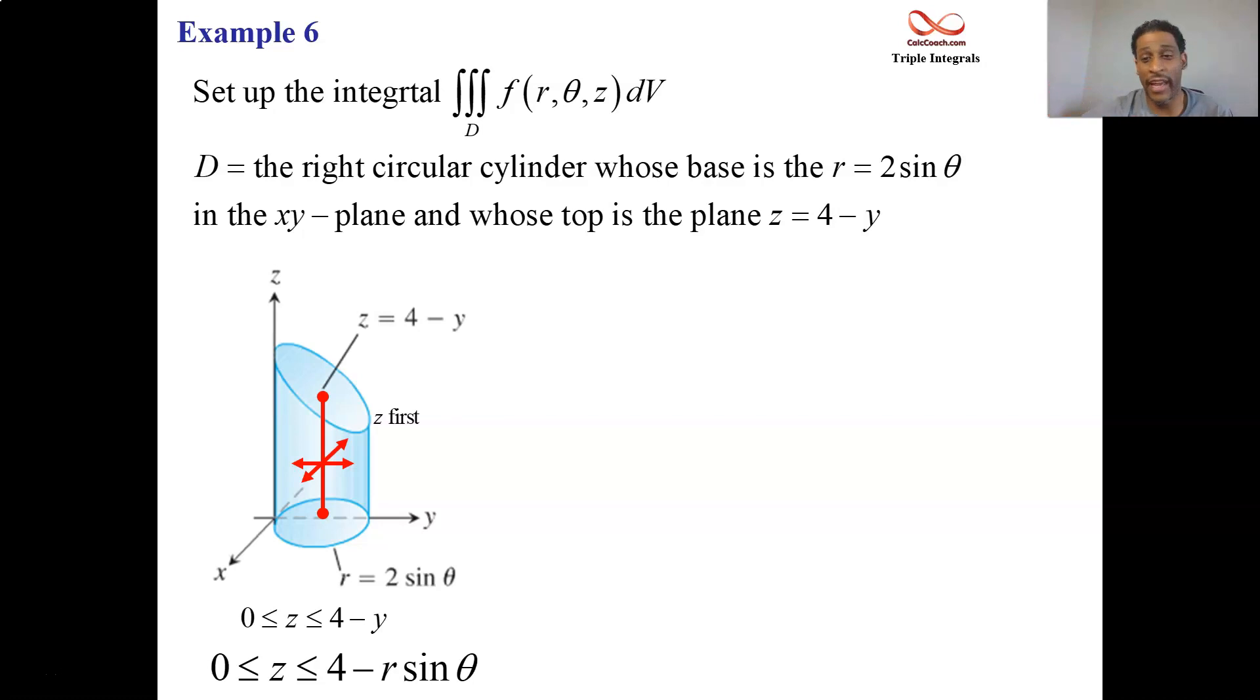Project this onto the xy-plane. We have that circle r = 2sin θ. We come radially out from the origin and spin in the direction of increasing theta. The lower bound on r is zero. The upper bound on r is 2sin θ. So those are the r bounds. We have our z bounds. We have our r bounds.